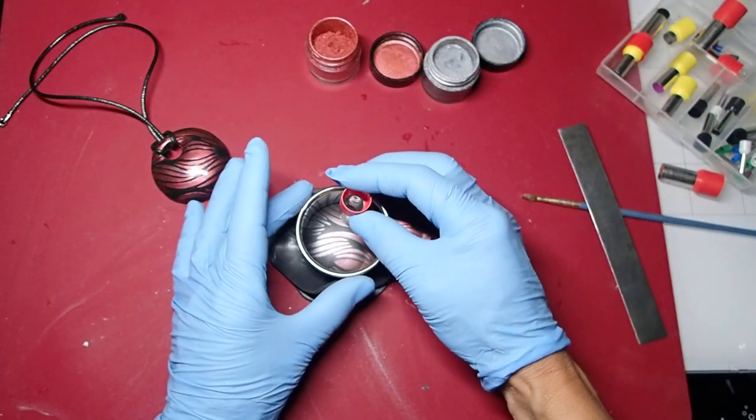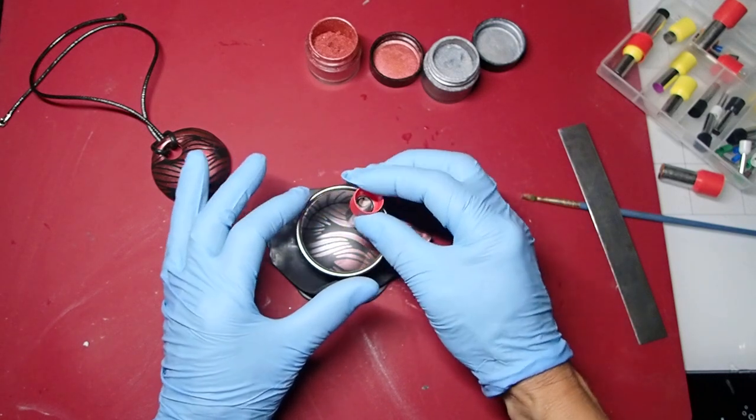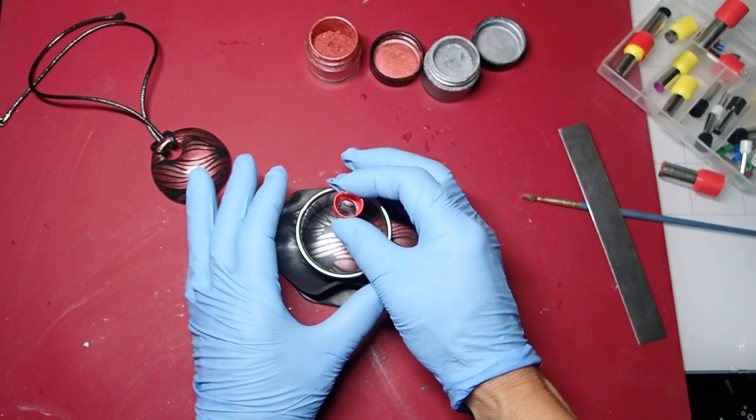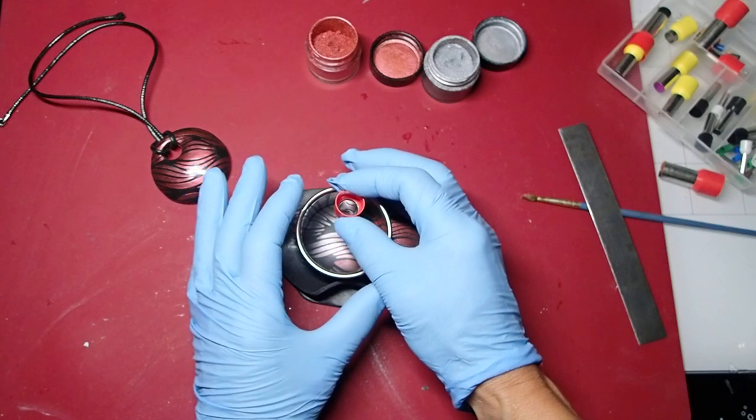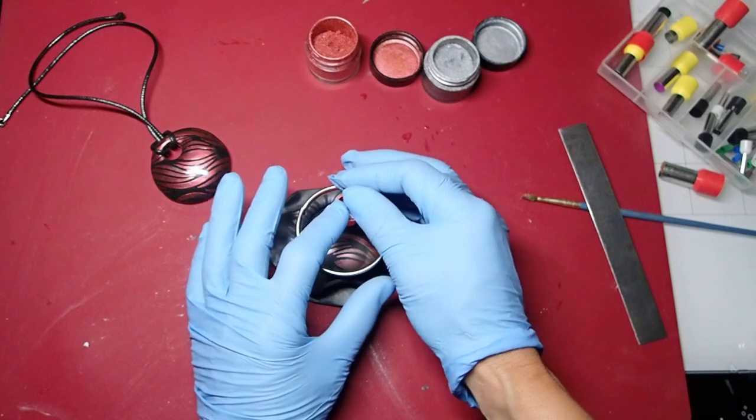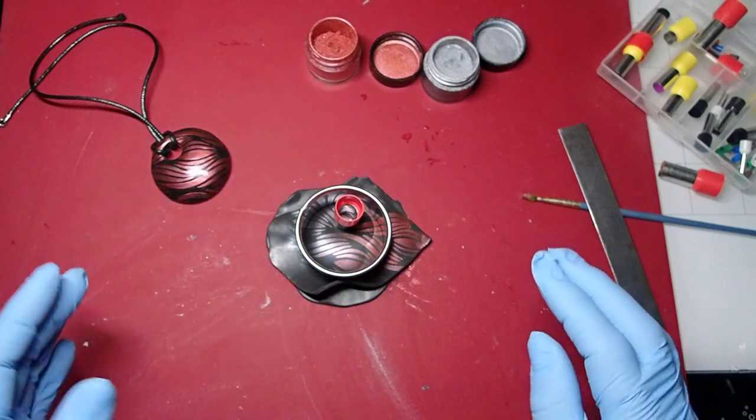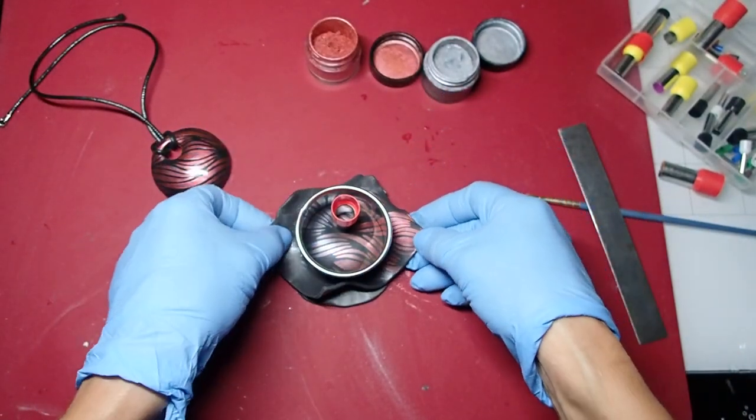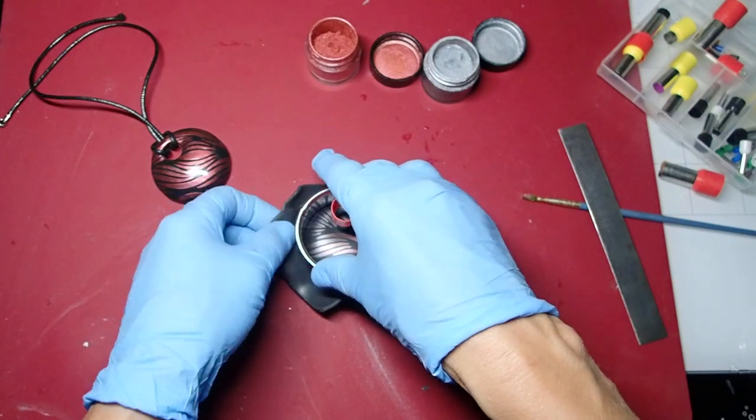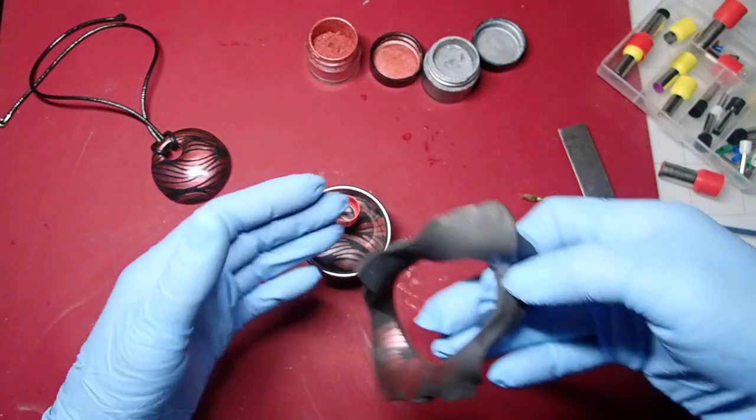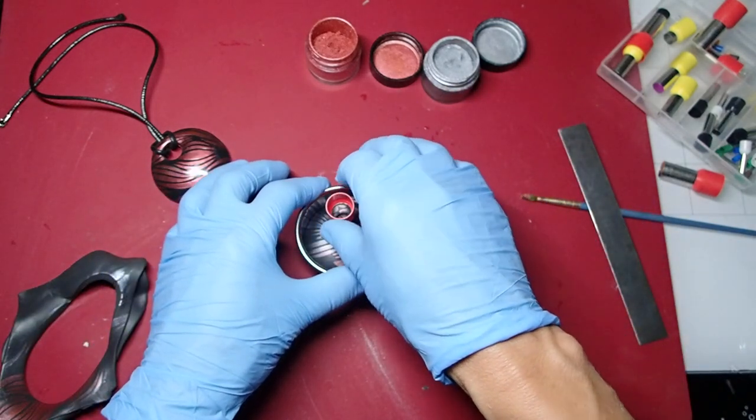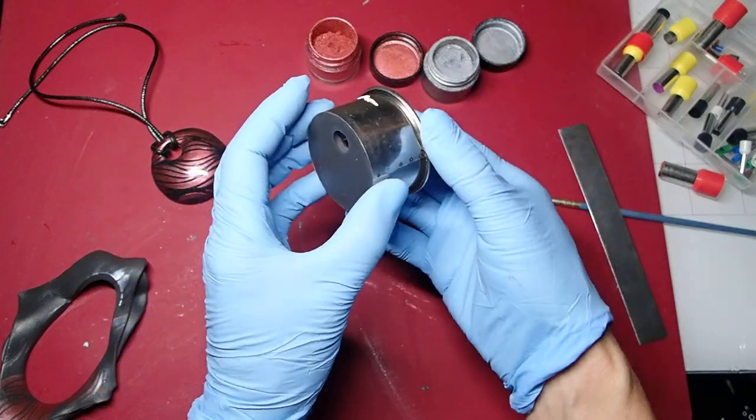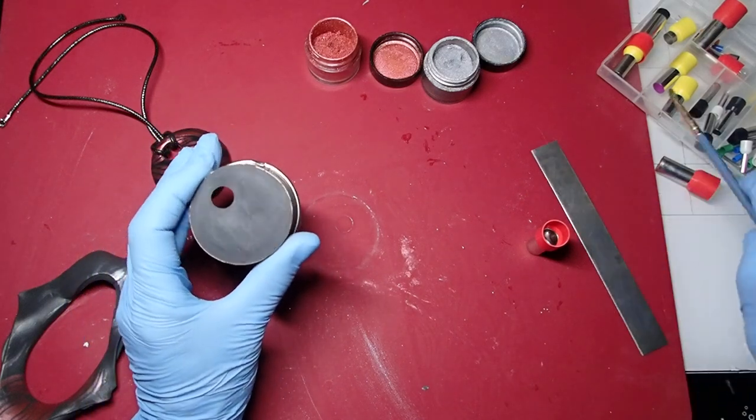So I'm going to punch my hole right there. Let me see if I can do it. When you do that, the whole pendant puffs up even more. I'm going to take the clay off. Going to take that out.